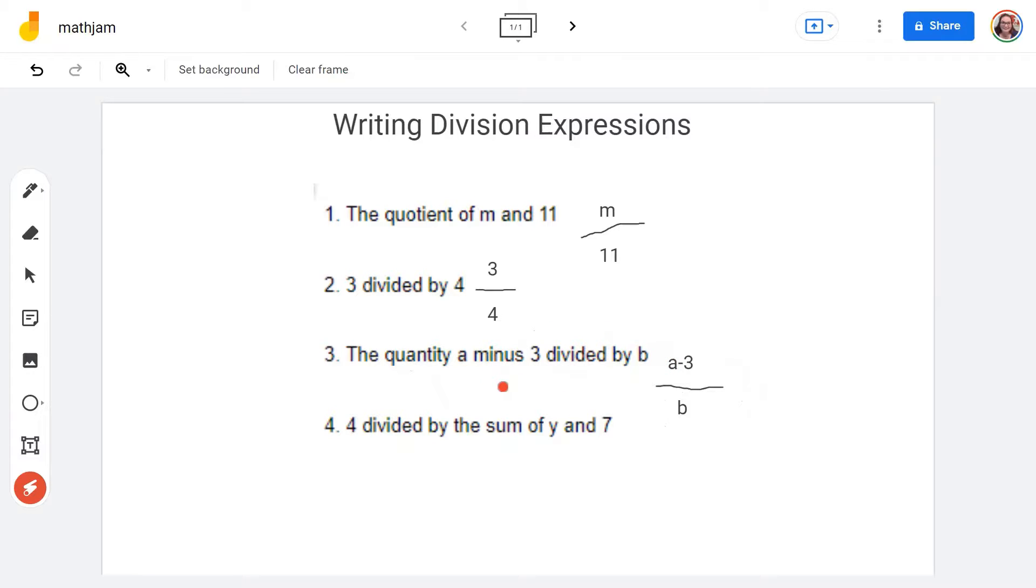All right, last one, let's take a look. So our last one says four divided by the sum of Y and seven. Four divided by the sum of Y and seven. So since it's four divided by, we're going to put our four on top.